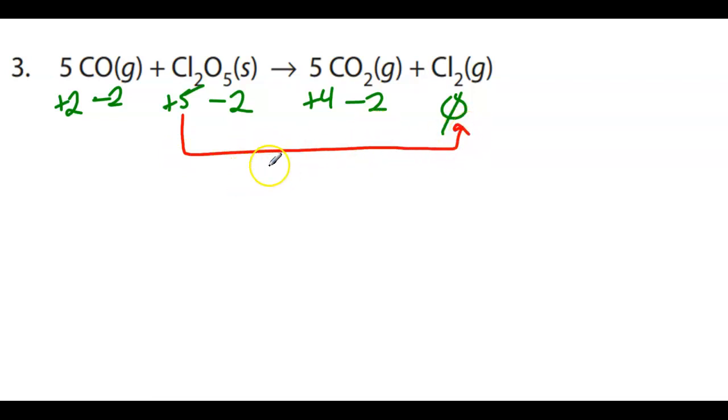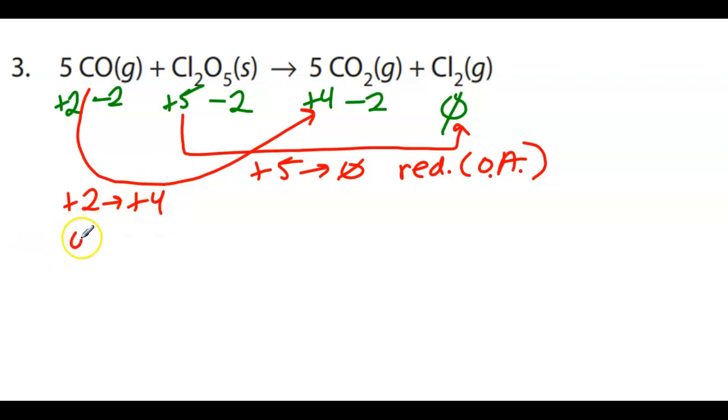Okay, so carbon, actually let's do chlorine first. Chlorine is going from positive five to zero, which means it is gaining electrons. So it's being reduced, which means it is the oxidizing agent. Carbon is going from positive two to positive four, which means it is losing electrons. It is being oxidized, which means it is a reducing agent.